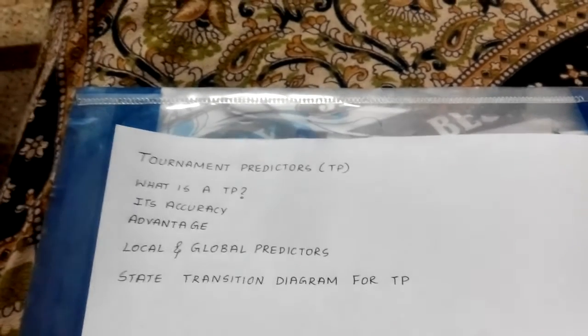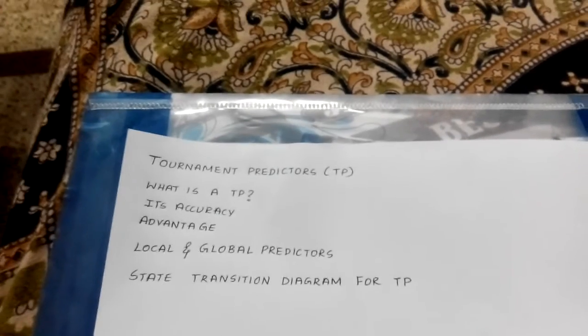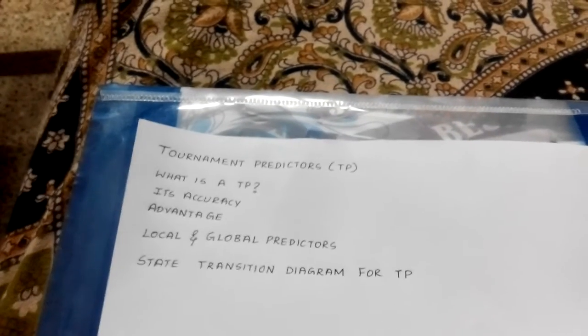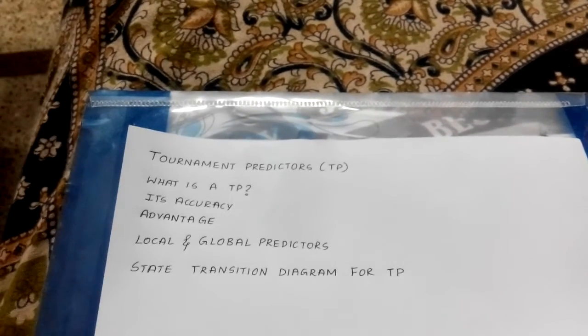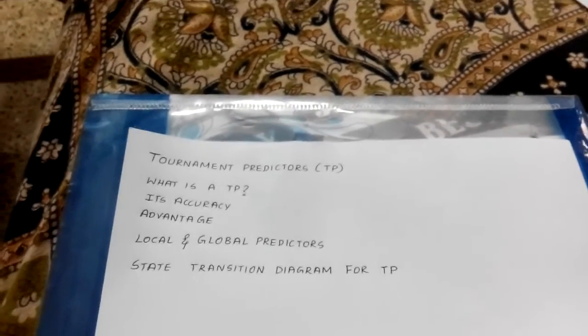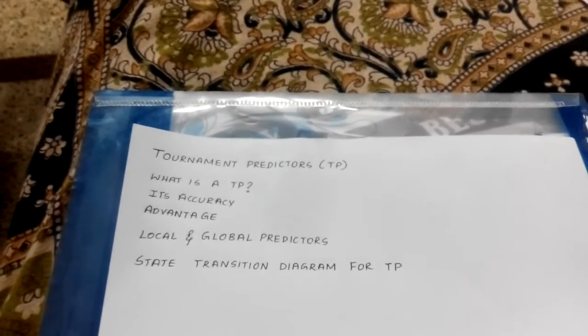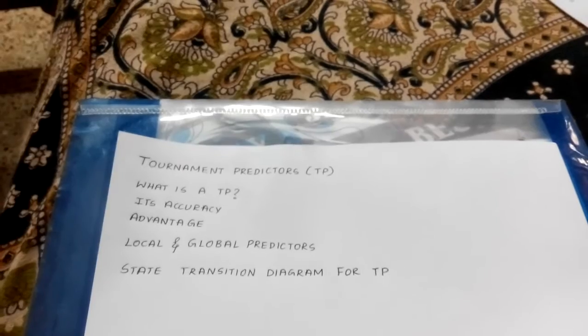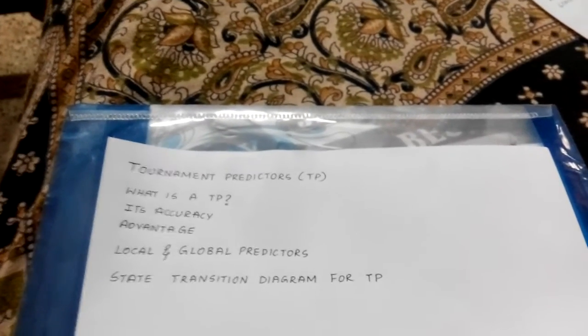Tournament predictor uses 4K 2-bit counters indexed by the local branch addresses to choose from among a global predictor and a local predictor. The global predictor also has 4K entries and is indexed by the history of the last 12 branches — which are the last 12 branches that had taken place before. Each entry in the global predictor is a standard 2-bit predictor. The local predictor consists of a 2-level predictor.